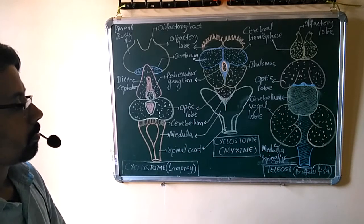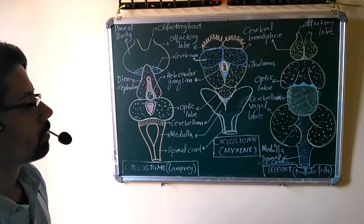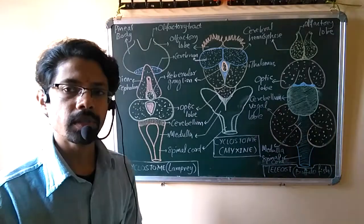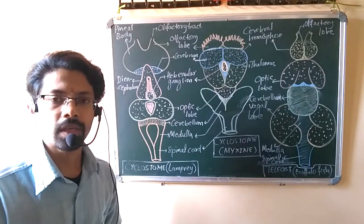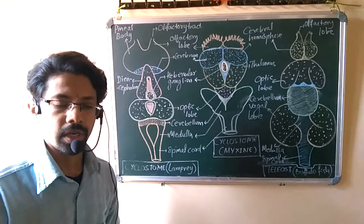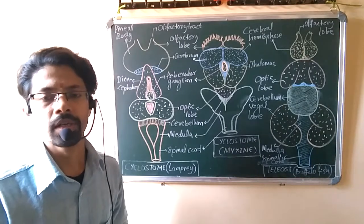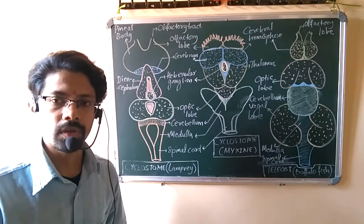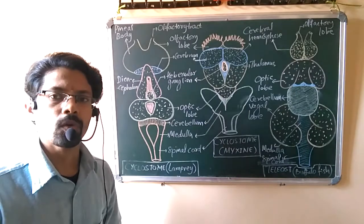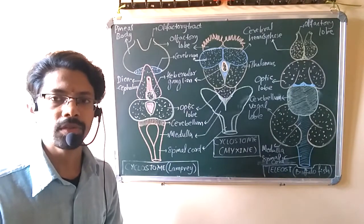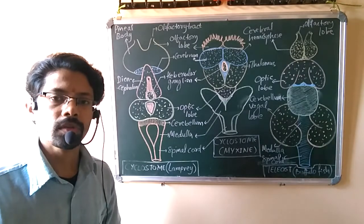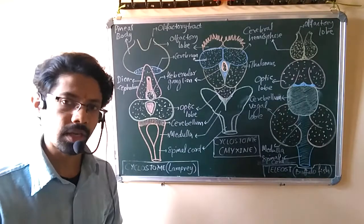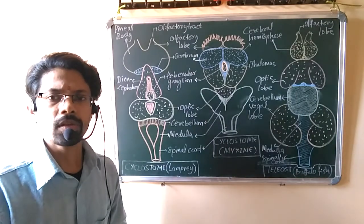Regarding primitive chordates' brains drawn on the board — one more point: I am also making separate videos for diagrammatic representation of brain anatomy, heart anatomy, and different organ anatomy in animals. I will be uploading those one by one, so you can check my other videos on comparative anatomy diagrams. Without talking much further, let's continue with the topic.